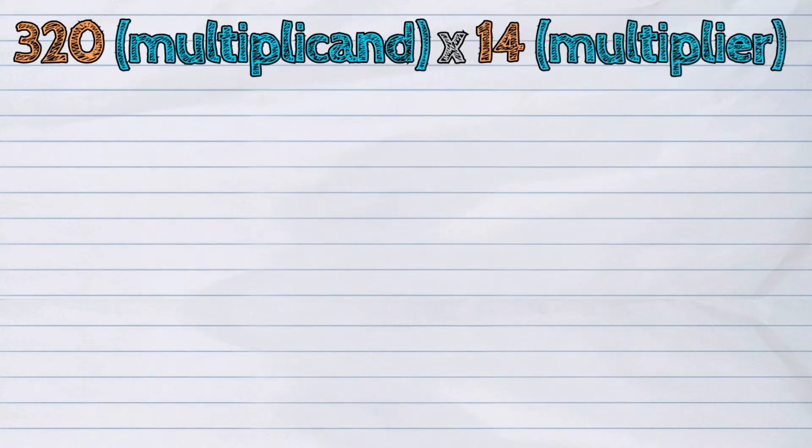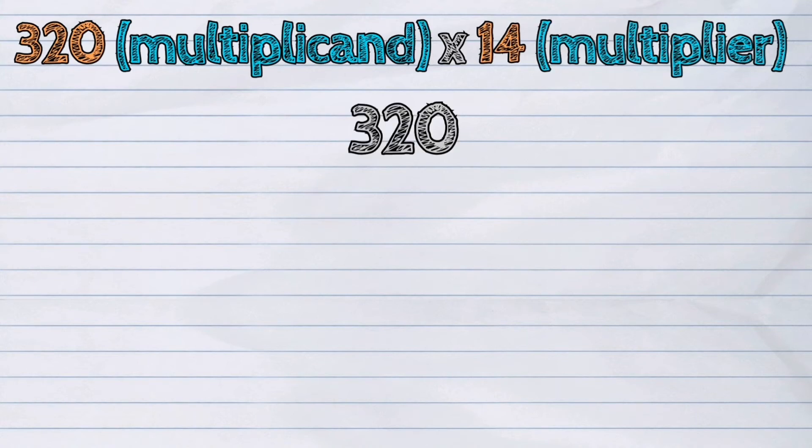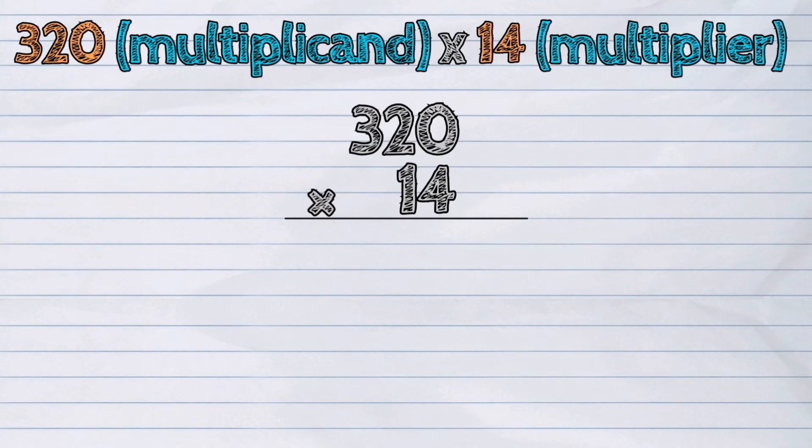So, 320, which is the multiplicand, times 14, which is the multiplier. Again, let's arrange the numbers in a column.